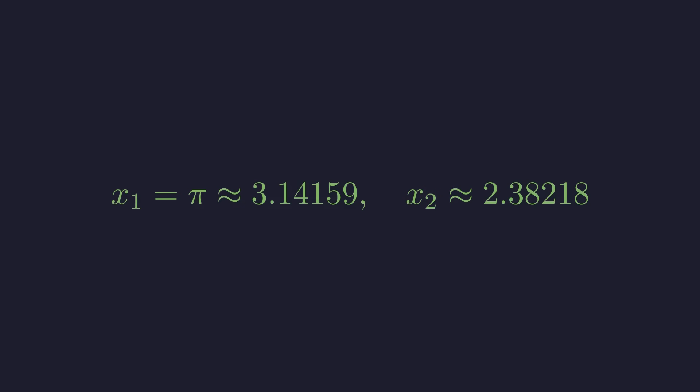So our final answer, there are exactly two real solutions to pi to the x equals x to the pi. The obvious one is pi itself, and the second is approximately 2.382. We've now verified this using calculus, the Lambert W function, and Newton's method. And there you have it, a seemingly impossible equation that actually has not one, but two real solutions. I hope this gave you a sense of how logarithms can transform difficult problems and how calculus helps us understand the structure of solutions.